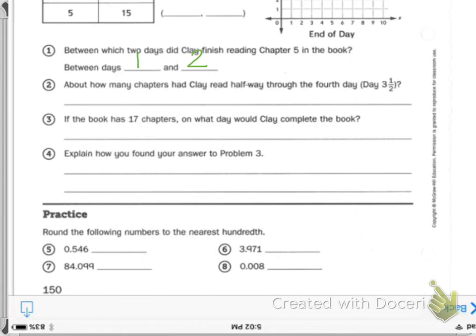So then you need to explain what you did. I want to see I, blah, blah, blah, whatever you did. I counted, I guessed, but it shouldn't be a guess because there is a correct answer. The bottom, round the following numbers to the nearest hundredth.